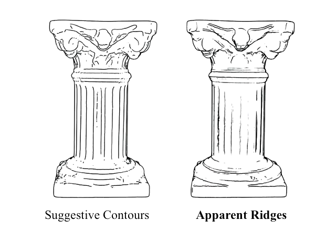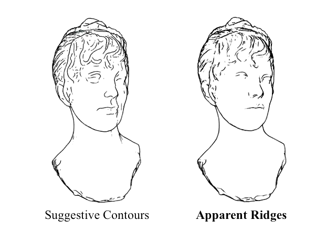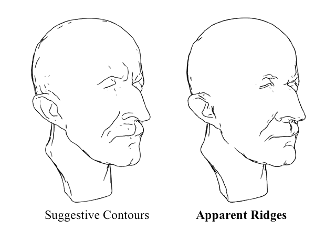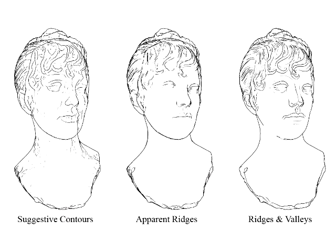Apparent ridges are different from suggestive contours. Both produce pleasing images, but we find that apparent ridges are more appealing in many cases. They produce more natural images for facial features and include lines in convex regions where suggestive contours cannot appear.